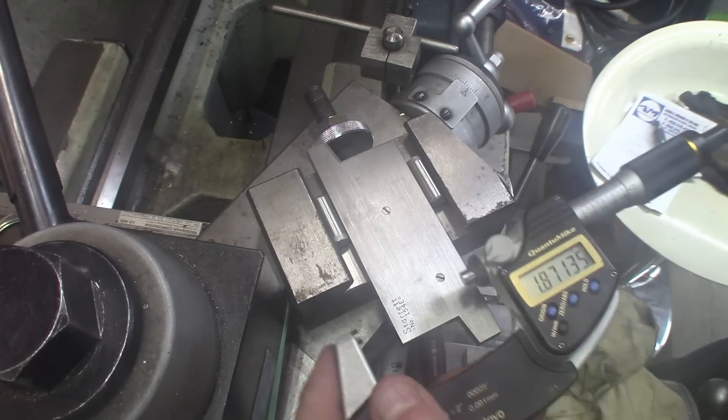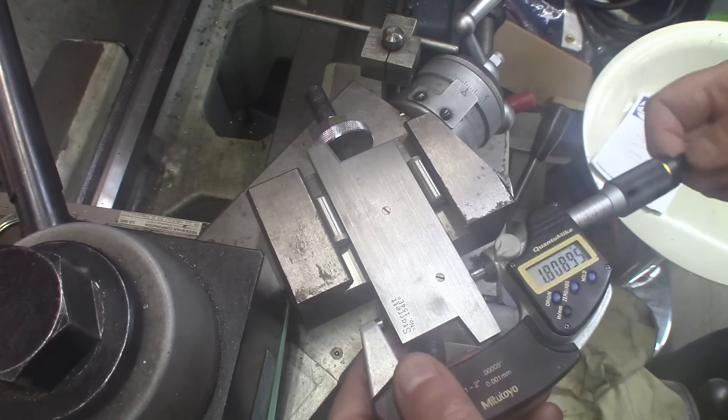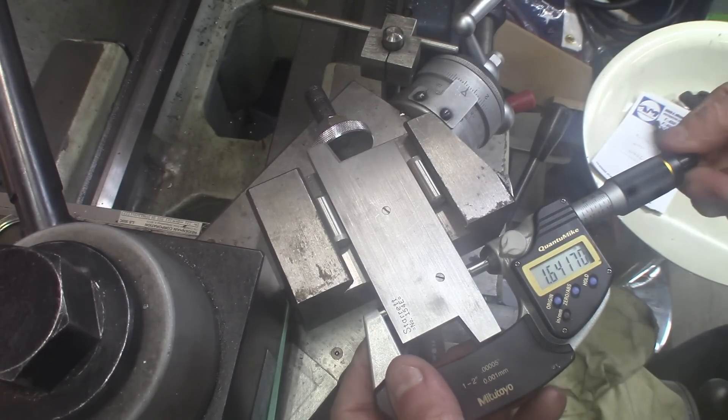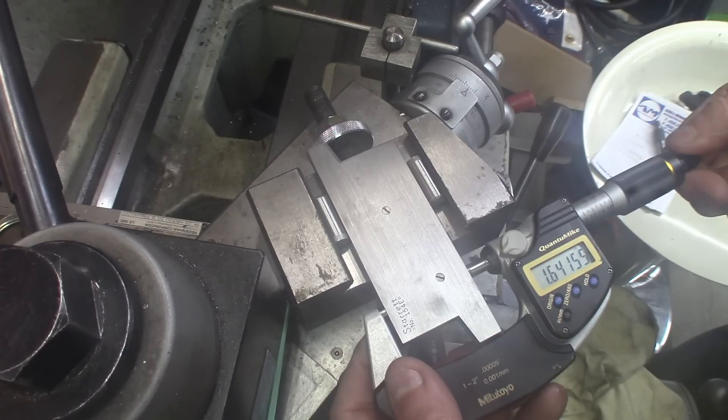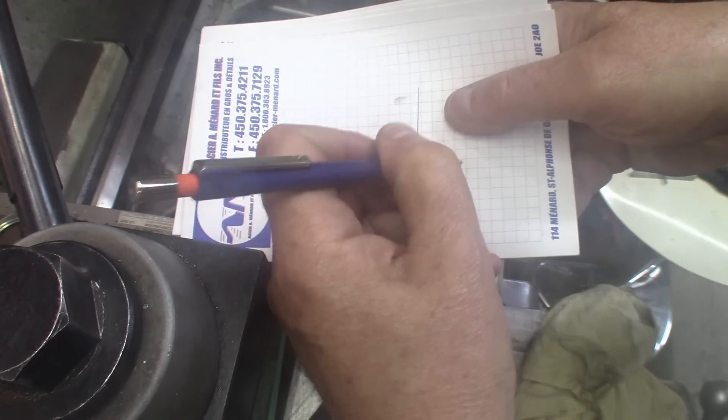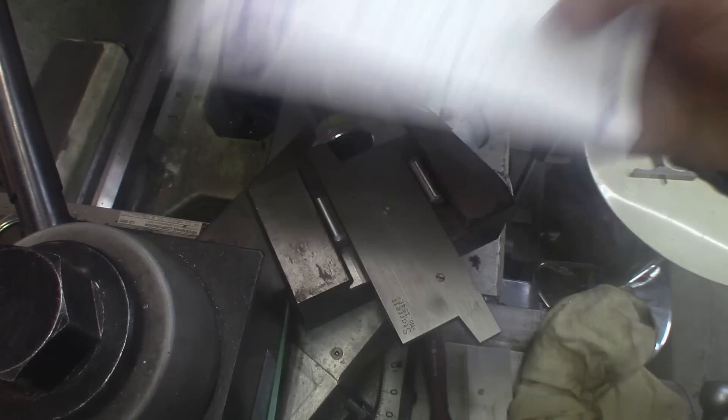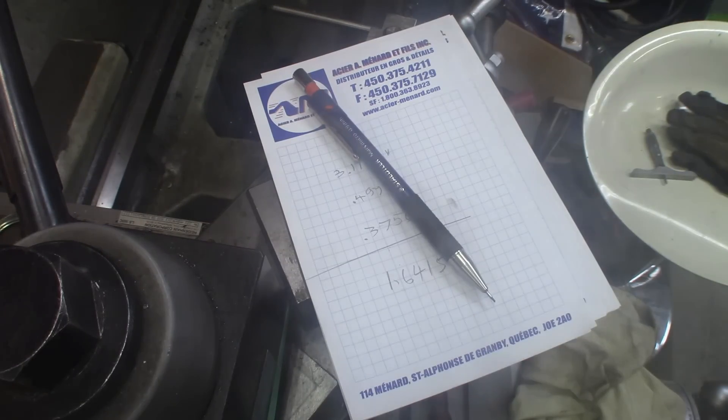Okay, now mosquito again. Let's measure this. 1.641 and a half. 1.6415 tenths. That's all we need. Let's go to the board and do some maths now.